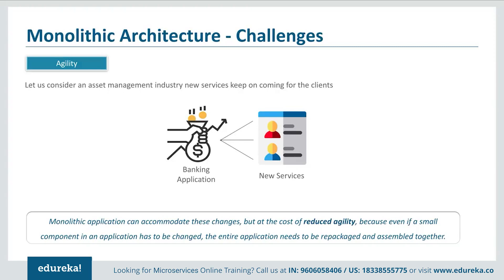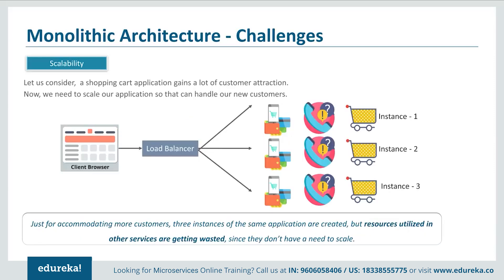The first challenge is agility. Consider an asset management industry where different clients come with different investments and need different services. If any new services had to be given or changes had to be made, a monolithic application could accommodate these changes, but at the cost of reduced agility. This happened because even if a small component in an application had to be changed, the entire application had to be repackaged together.